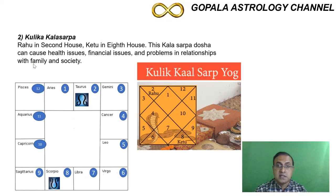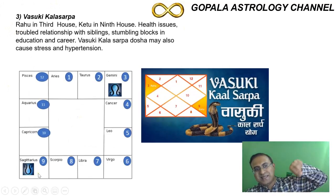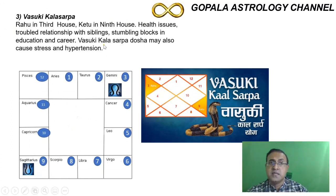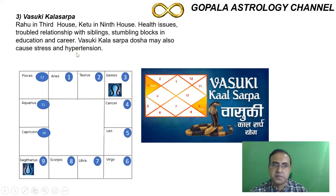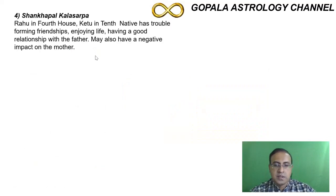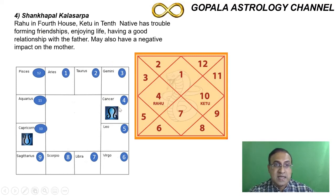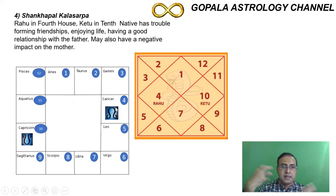The next one is called Vasuki Kala Sarpa Dosha — here Rahu is placed in the third house and Ketu goes to the ninth house. The third house represents siblings, the thought process, and writing, so all these are affected. This person will have a lot of stress in their career and may suffer from hypertension. The next one is Shankapal Kala Sarpa Dosha — when Rahu goes to the fourth house and Ketu goes to the tenth house. The fourth house is about the motherland and mother, and the tenth house represents the father, so the relationship with both parents will be very stressful.